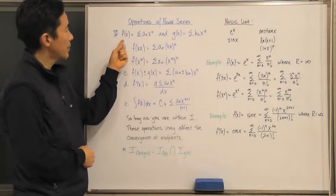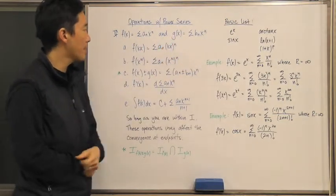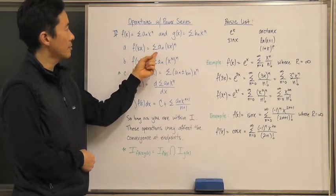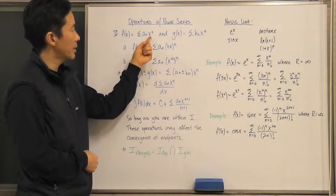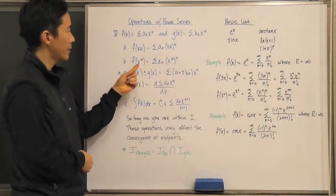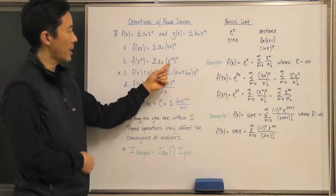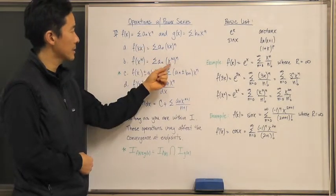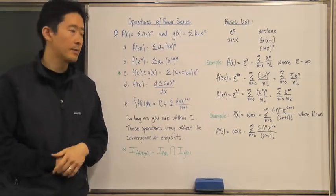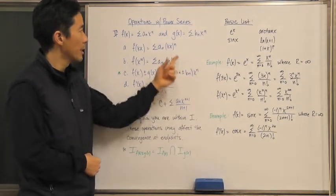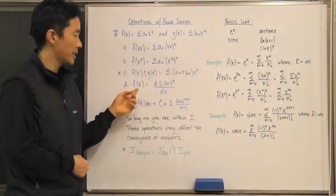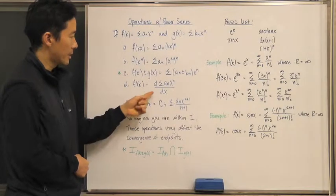For example, if f(x) is equal to one power series and g(x) is equal to another, then f(kx) is equal to that power series with kx replacing x raised to the n. Similarly, substituting x^N replaces x in f(x). We can also add or subtract two different power series, where the only change is that the coefficients become a_n plus or minus b_n.